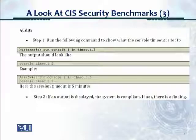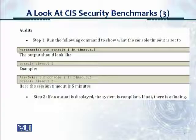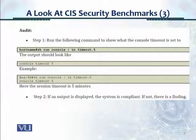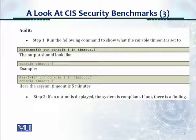This is the audit screenshot. In the colored bar, it asks you to type in certain commands and shows you what the output should look like. In step one, it asks you to run the following command to show what the console timeout is set to — you type 'show run console' and the output should look like 'console timeout 5' as an example. If you want to set it to five minutes, you would type 'show run console' on the ASA firewall and it should show 'console timeout 5'. In step two, if that output is displayed, the system is compliant; if not, there's a finding.